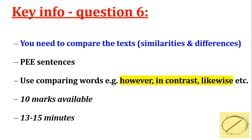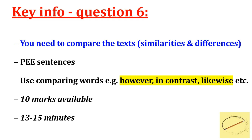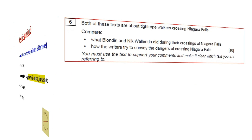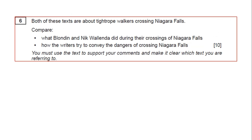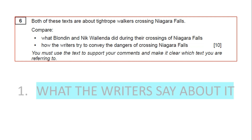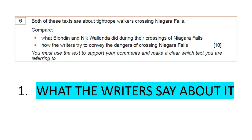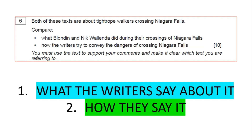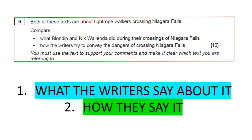On average, students do the worst on this question in the reading exam — mainly not because it's a particularly hard question, but because it's the last question and people run out of time. So you need to give yourself at least 13 minutes. The question asks you to compare what Blondin and Wallander did on the crossings of Niagara Falls, and how the writers convey the dangers. The first bullet point is what the writers say about the crossings; the second is how they say it — adjectives, structure, punctuation, things like that.